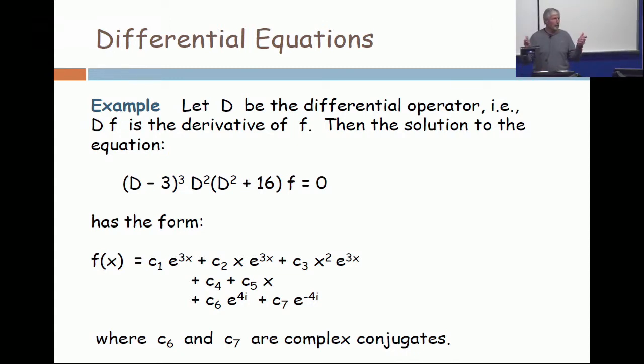And e to the minus 4i is cosine minus 4 plus i times sine minus 4. So if those are your complex numbers and you're going to stay in the real number, the c6 and the c7 have to be complex conjugates, and then all the imaginary terms cancel.